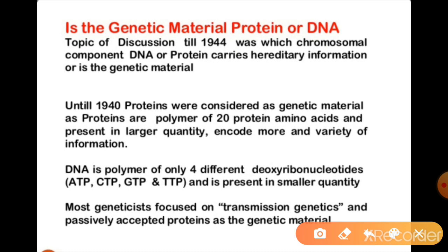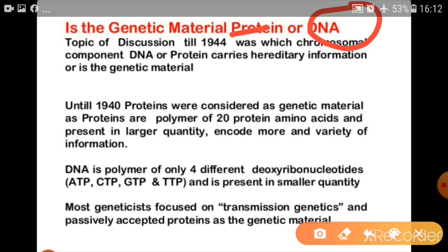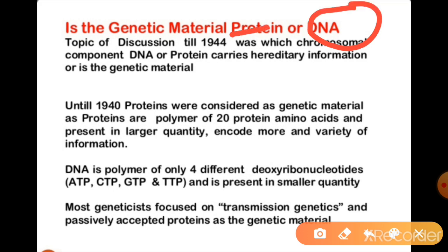A brief discussion: was genetic material DNA or protein? Chromosomes are vehicles that carry them, and chromosomes are made from proteins as well as DNA. Until 1944, there was a discussion and it was thought that protein could be genetic material carrying hereditary information, because proteins are larger polymers with 20 different types of amino acids. But if you look at DNA, it only has 4 bases — 4 deoxyribonucleotides: ATP, CTP, GTP, and TTP, that is adenine, cytosine, guanine and thymine.